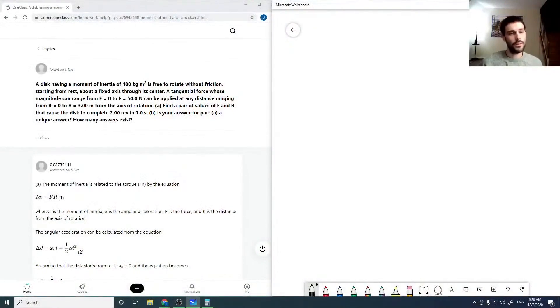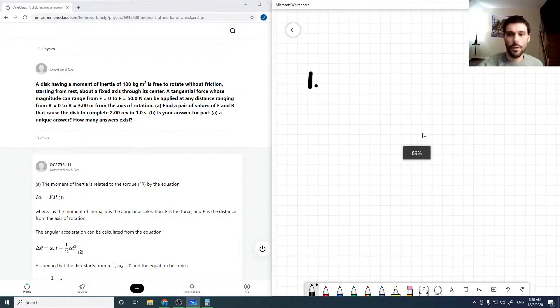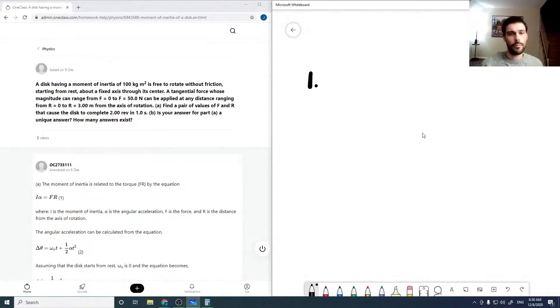So we can get right started here. This first question says we have a disc rotating with a moment of inertia of 100 kilograms meters squared, and it's free to rotate without friction about a fixed axis through its center.